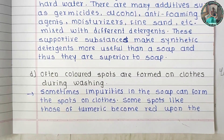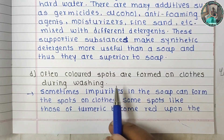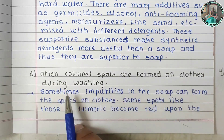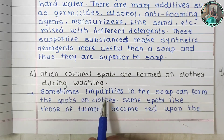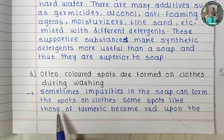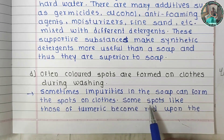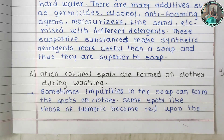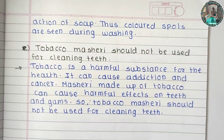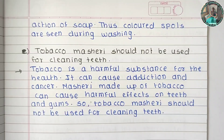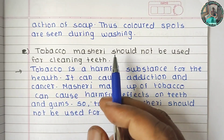Often colored spots are formed on clothes during washing. Sometimes impurities in the soap can form spots on the clothes. Some spots, like those of turmeric, become red upon the action of soap — thus colored spots are seen during washing.